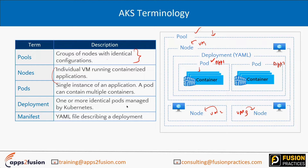Within a pod you have multiple containers deployed. A deployment is nothing but one or more identical pods managed by Kubernetes. This is defined by a YAML file, which allows you to deploy containers and configure how they will run within the pod. Within a pod you can have one container or multiple containers. The manifest is the same YAML file that defines what needs to happen to deploy the application.